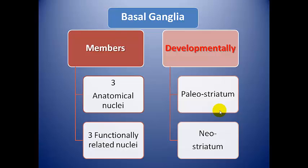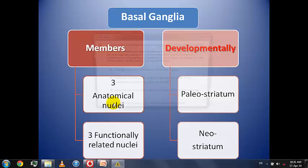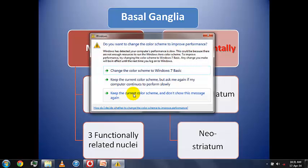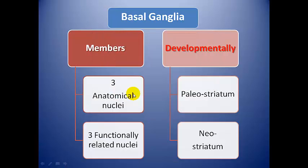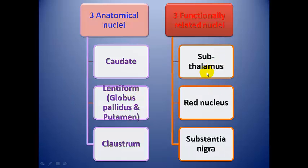Developmentally, the basal ganglia nuclei are either paleostriatum or neostriatum. In the body, these nuclei are arranged as six nuclei — three anatomically related nuclei: the caudate, the lentiform, and the claustrum; and three functionally related nuclei: the subthalamus, the red nucleus, and the substantia nigra.